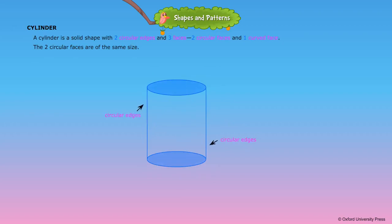Cylinder. A cylinder is a solid shape with two circular edges and three faces, two circular faces and one curved face. The two circular faces are of the same size.